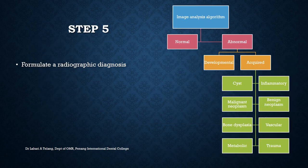Step five is the formulation of a radiographic diagnosis. When formulating a diagnosis, keep the image analysis algorithm in mind. First, analyze whether the lesion is normal or abnormal. If abnormal, is it a developmental disorder or acquired? If acquired, it falls under categories of cyst, inflammatory lesion, malignant neoplasm, benign neoplasm, bone dysplasia, vascular lesion, metabolic lesion, or lesion due to trauma.